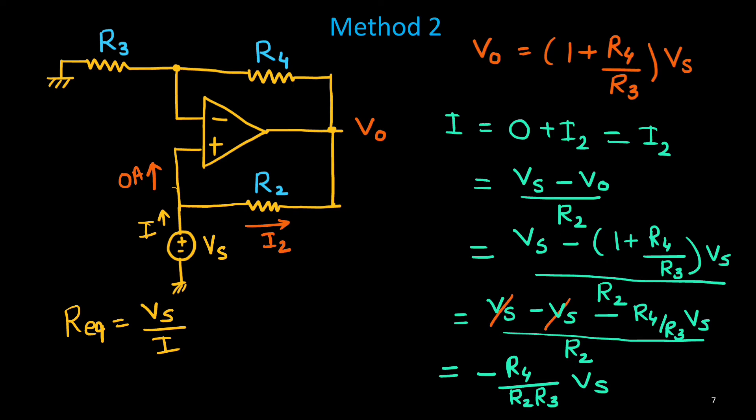Therefore, the R equivalent will be simply Vs upon I. That is, your minus R2 times R3 upon R4. And you see here, this resistance is given by negative. Meaning is that, the source is actually not supplying the current in positive direction. In opposite direction, current is coming. That is, because of amplification of this op-amp. So, V0 value is larger than Vs. Next. So, this is your equivalent resistance. Now, that we can use it.